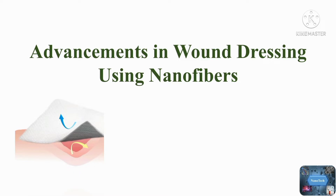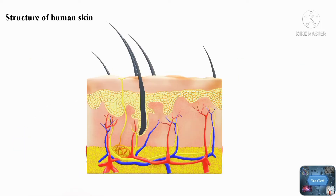Understanding the structure of the skin is critical for determining the depth and severity of the wound. The skin is the largest organ in the human body and is made up of three layers: the epidermis, dermis, and hypodermis.